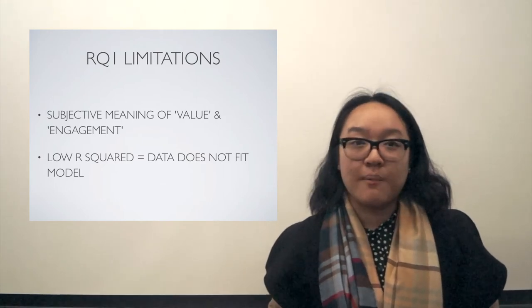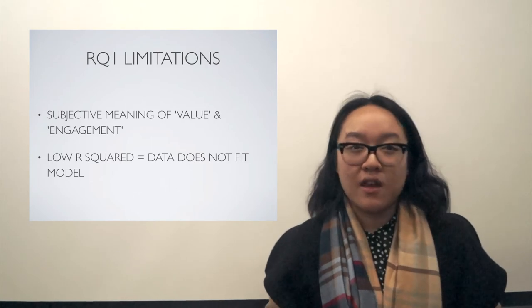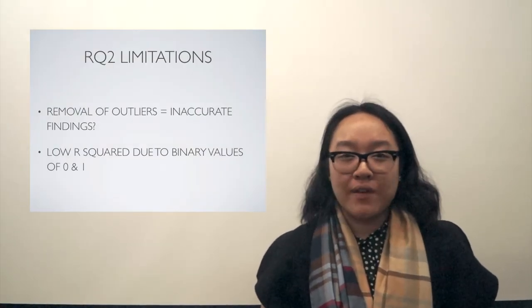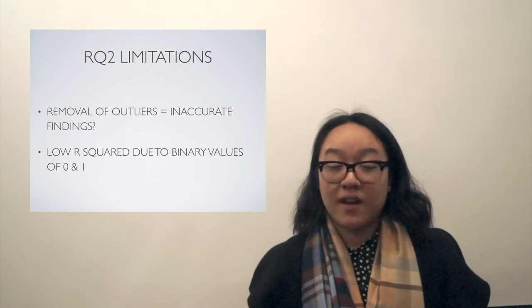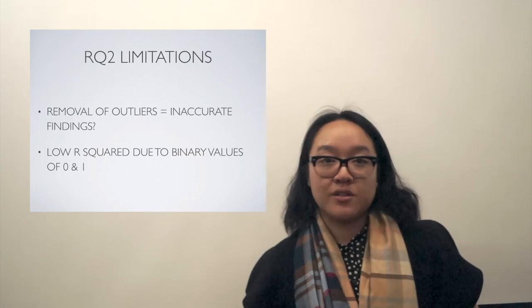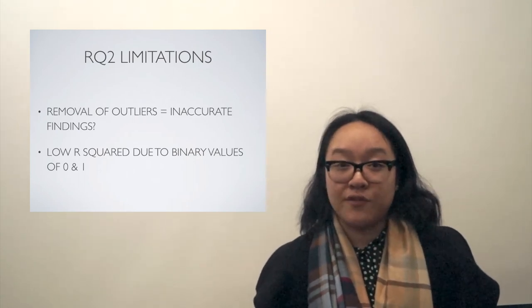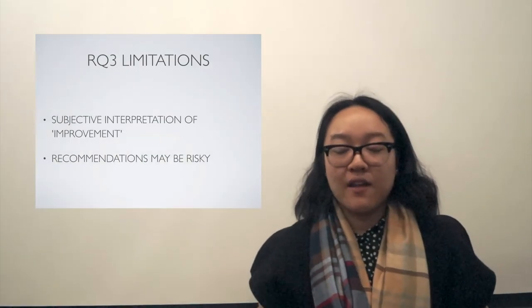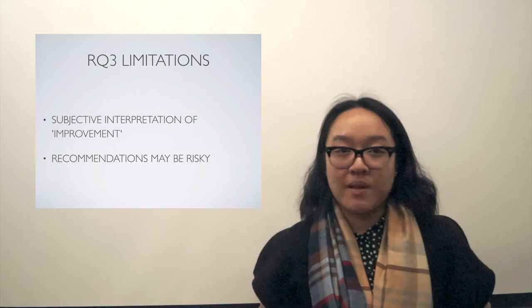Over the course of assessing the program, issues with the integrity of the data arose — for instance, the presence of duplicate records as well as extreme outliers led to data manipulation in order to generate accurate findings. Outliers were removed to obtain a better fit; however, the altered data may have resulted in inaccurate findings. Regression analyses revealed a low R², indicating the model does not fit the data set, and difficulty in prediction can be attributed to raw data being converted to categorical data in the coding process, consisting of binary values between 0 and 1. Lastly, regarding research question three, similar to research question one, the term 'improvement' is also subject to interpretation and the findings may overestimate the depth of the program's weaknesses. Thanks for watching our video — we hope you found some intuitive insights in our data and enjoy reading the report.